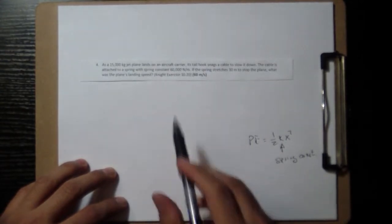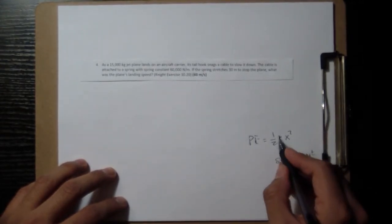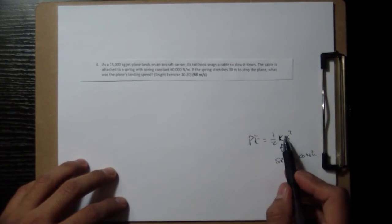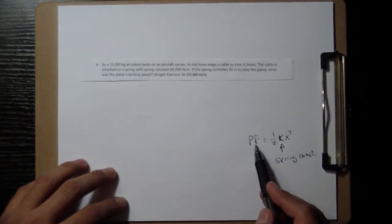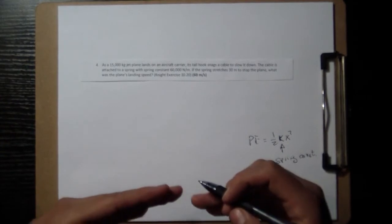And so that's what they're giving us here. The 60,000 newtons per meter is going to be our k. x is how much it stretches, so we have 30 meters, and so we can figure out how much potential energy goes into stretching that spring.